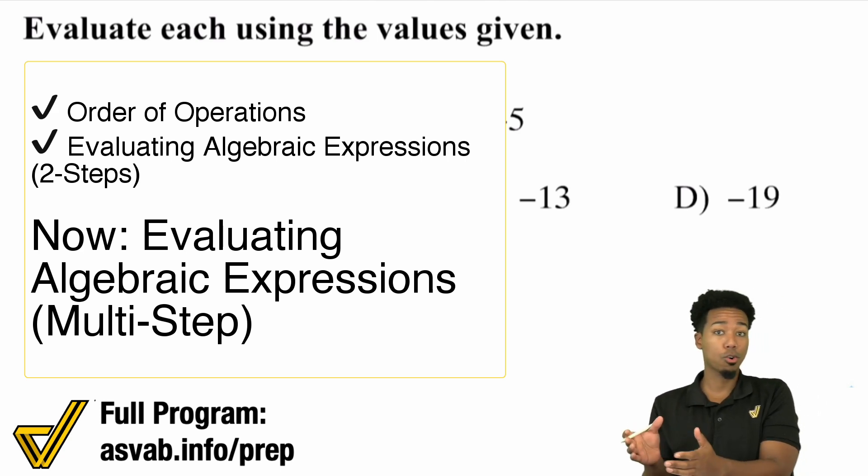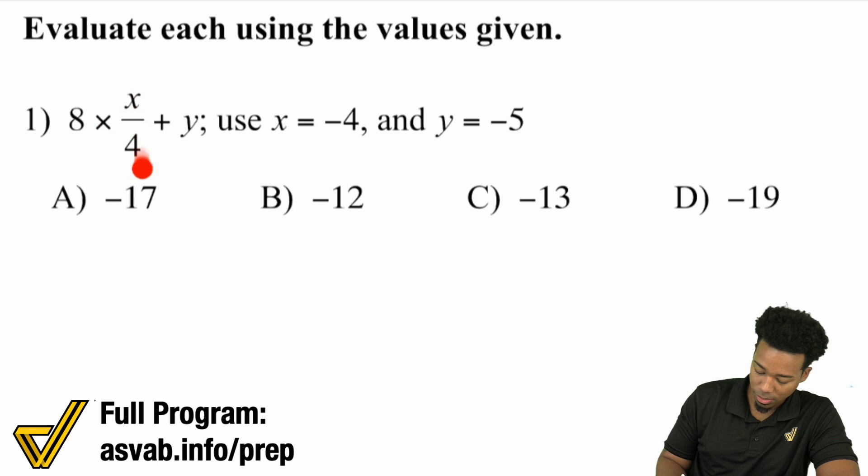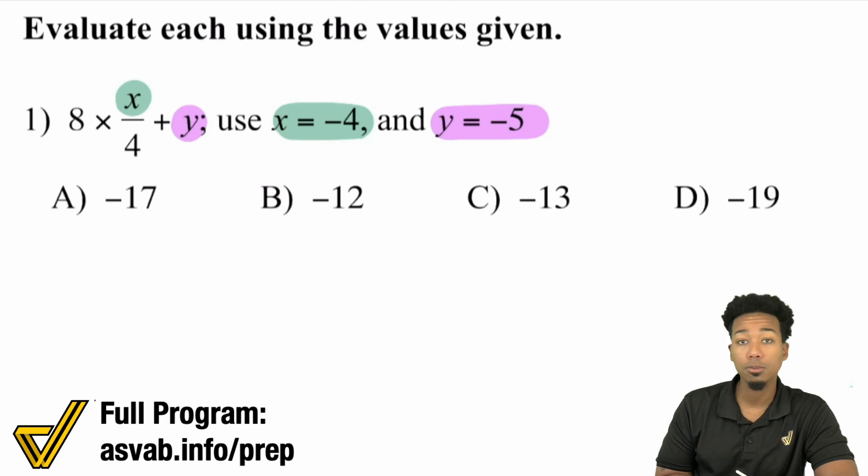Remember, if you know your order of operations and how to plug a number in when they tell you what number it is, it's not complicated at all because you've done all the things you need to prepare for this. Now we're just putting it together. I'm going to go through plenty of examples, follow along, pause the video, try some things out, and let's keep getting smarter. Here we go. We have 8 times x over 4, then plus y. We're told x is going to be negative 4 and y is going to be negative 5. All we have to do is plug the right numbers in the right places.